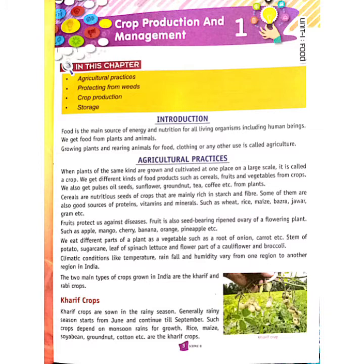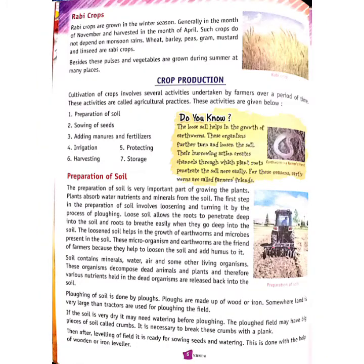Now let's talk about Rabi crops. What are Rabi crops? Rabi crops are grown in the winter season. They are sown in the month of November and harvested in April. Unlike Kharif crops, Rabi crops do not depend heavily on rainfall; the moisture level needed is different. Kharif season runs June to September, while Rabi season runs November to April.